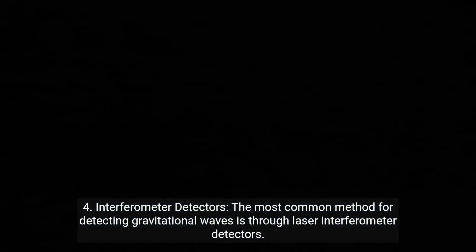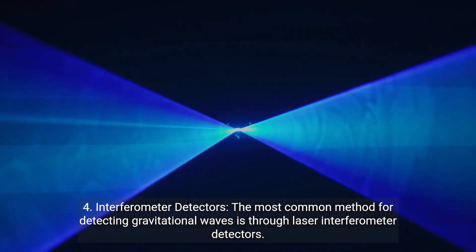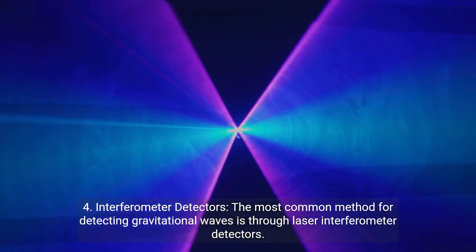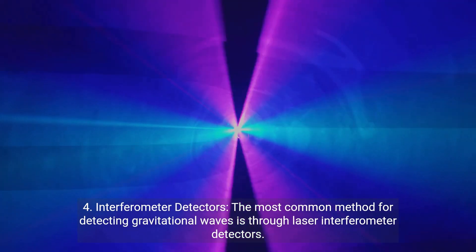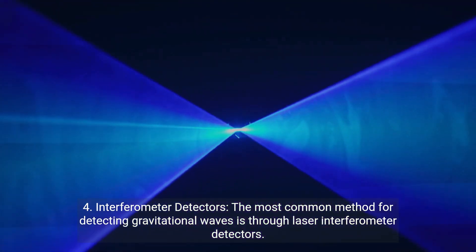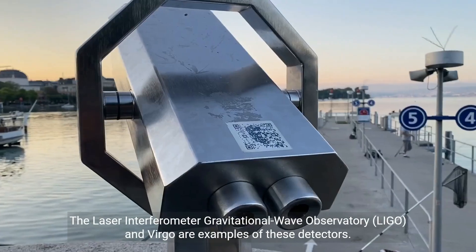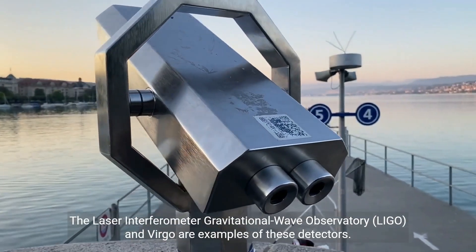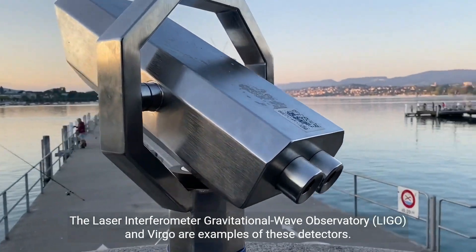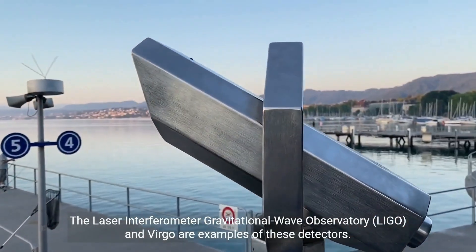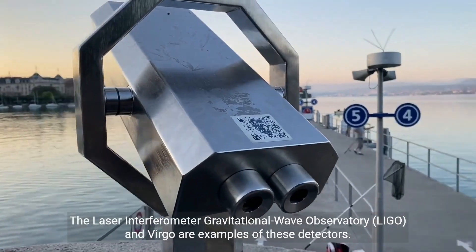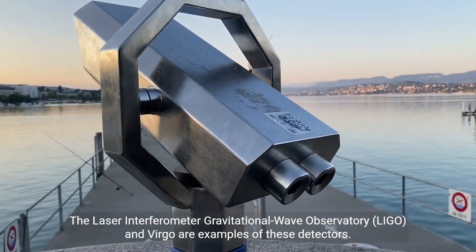Interferometer detectors: The most common method for detecting gravitational waves is through laser interferometer detectors. The Laser Interferometer Gravitational-Wave Observatory, LIGO, and Virgo are examples of these detectors.